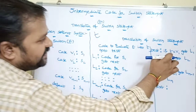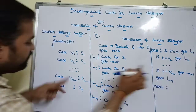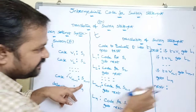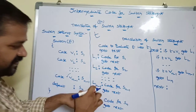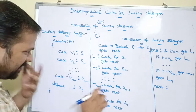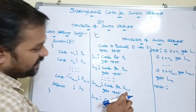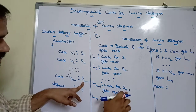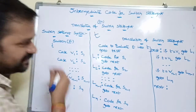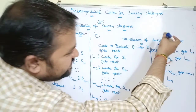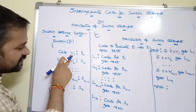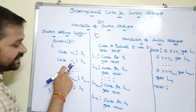Likewise, if t equals vn-1, then 'goto Ln-1' is executed. Control transfers to Ln-1, where the code for sn-1 is written. After that, 'goto next' sends control to the next label.